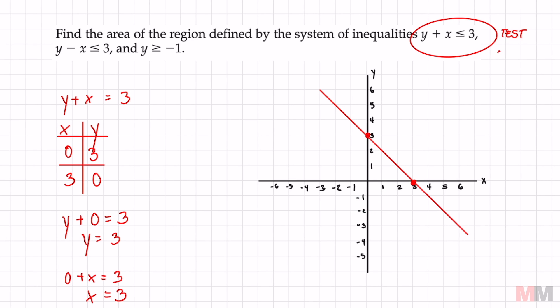And see if that's a true statement and that's going to determine what side I'm going to be shading. Zero is less than or equal to three which is true. So that means that my test point is the side that I'm going to shade.